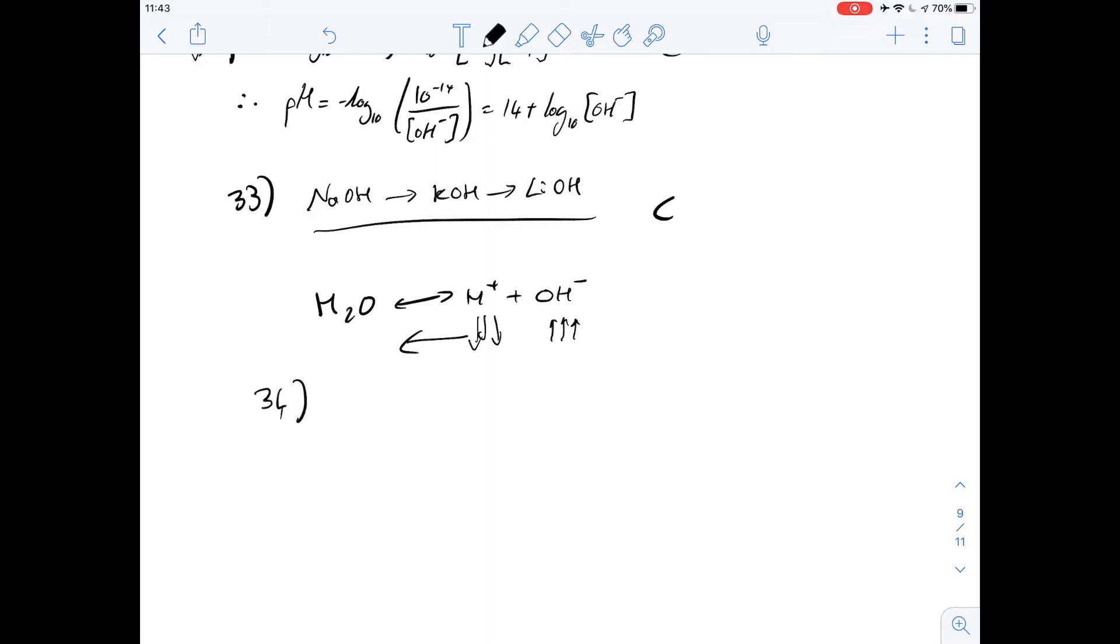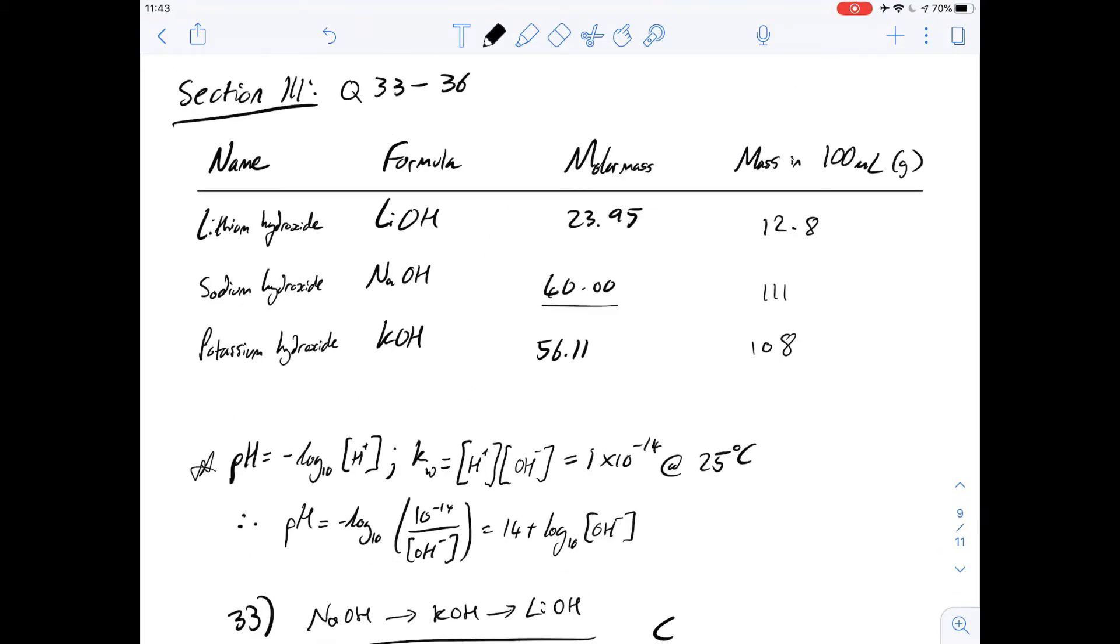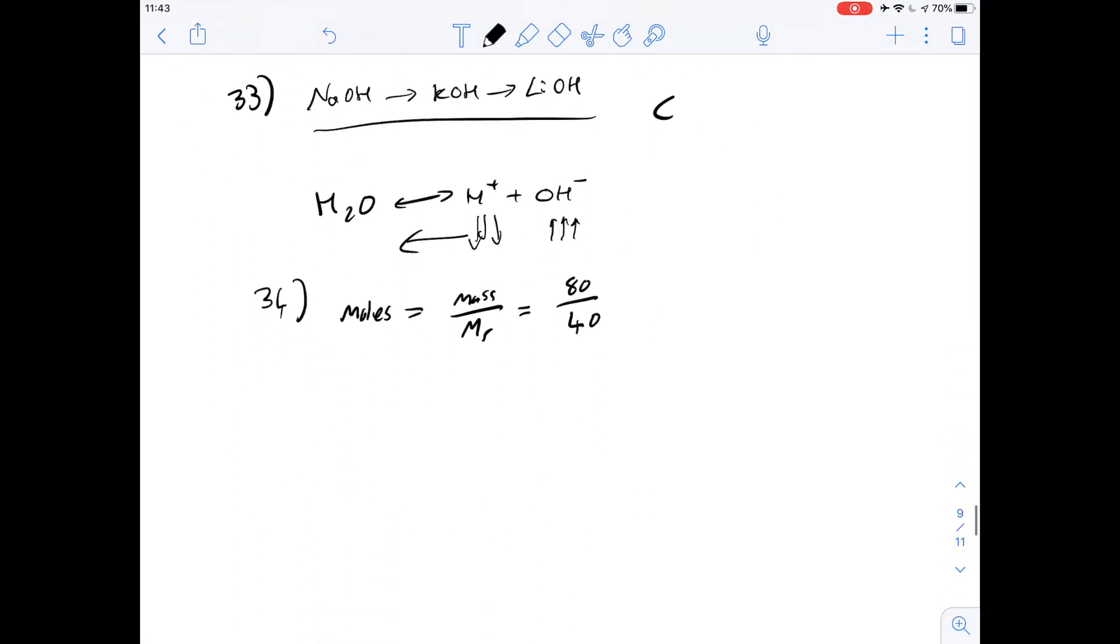First, we work out how much sodium hydroxide we're adding, so what is 80 grams of sodium hydroxide in moles? To work out the number of moles, we divide the mass by the molar mass, which is 80 grams over 40. 40 is given in the table as the molar mass for sodium hydroxide. That gives us 2 moles of sodium hydroxide.